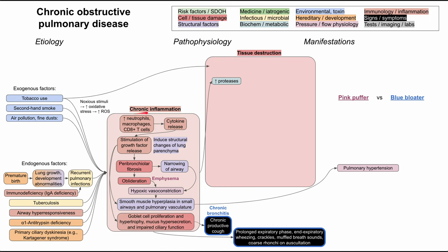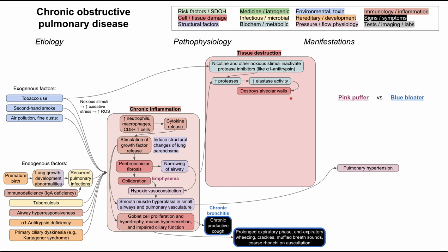Now let's talk about how chronic inflammation leads to tissue destruction in COPD. One of the effects of growth factors and cytokine release is that it increases the activity of proteases — enzymes that break down protein. Tobacco use, specifically nicotine, and other noxious stimuli also inactivate protease inhibitors, which essentially increases the effect of proteases. When you have increased elastase activity, you're going to destroy the alveolar walls — this is again that emphysema pathophysiology.